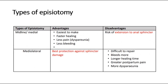To compare the types of episiotomy, we can look at the advantages and disadvantages. For the midline incision, the advantages are that it is the easiest to make, there is faster healing, less pain — including less dyspareunia, pain on sexual intercourse after delivery — and also less bleeding. However, there is a disadvantage where there is a risk of extension to the anal sphincter, which we want to avoid.